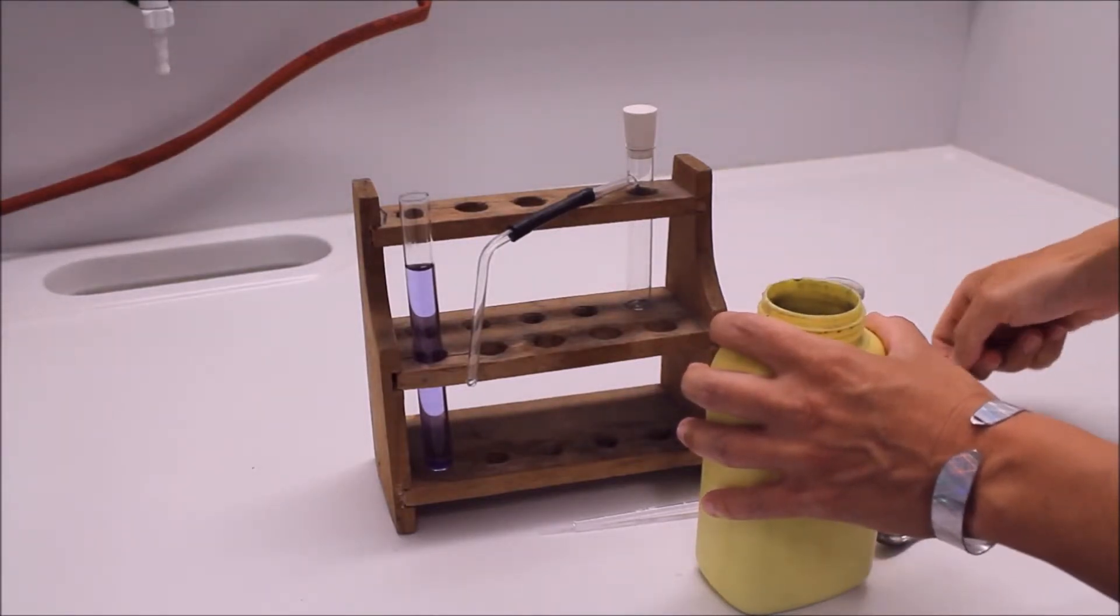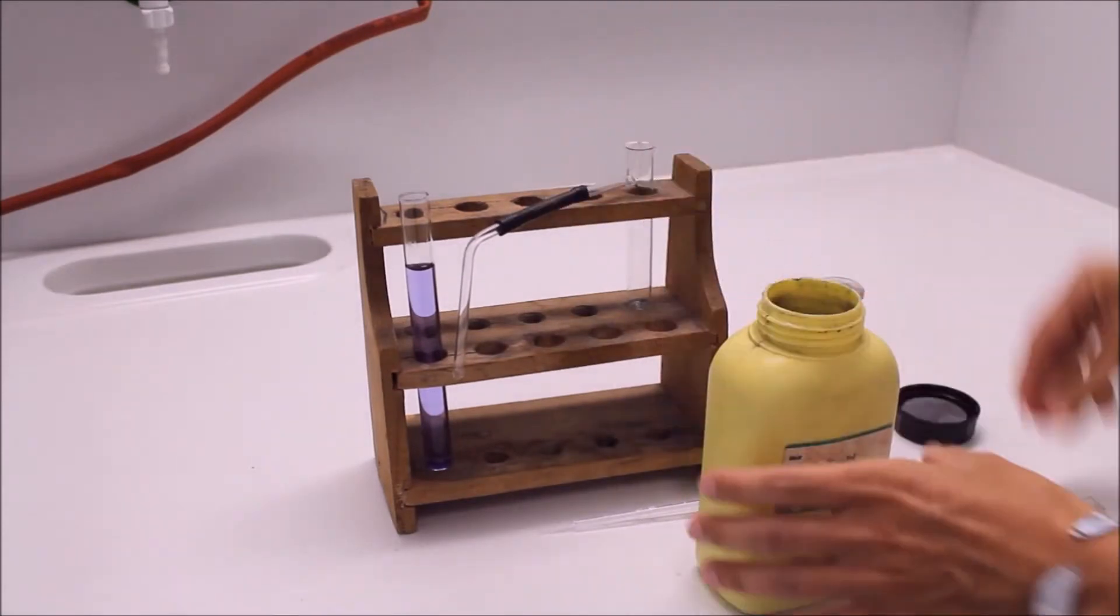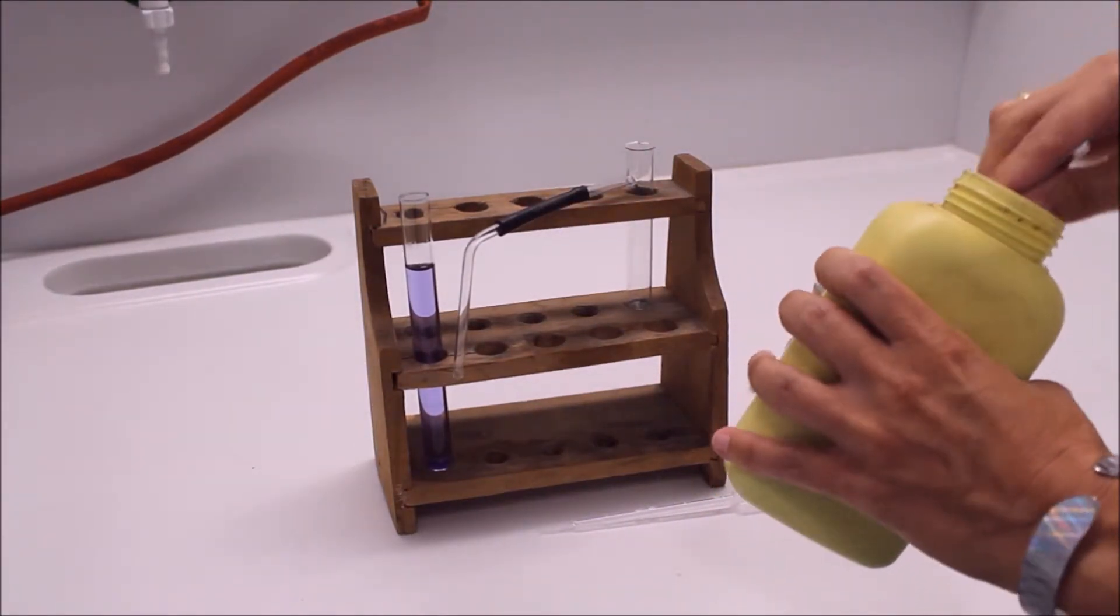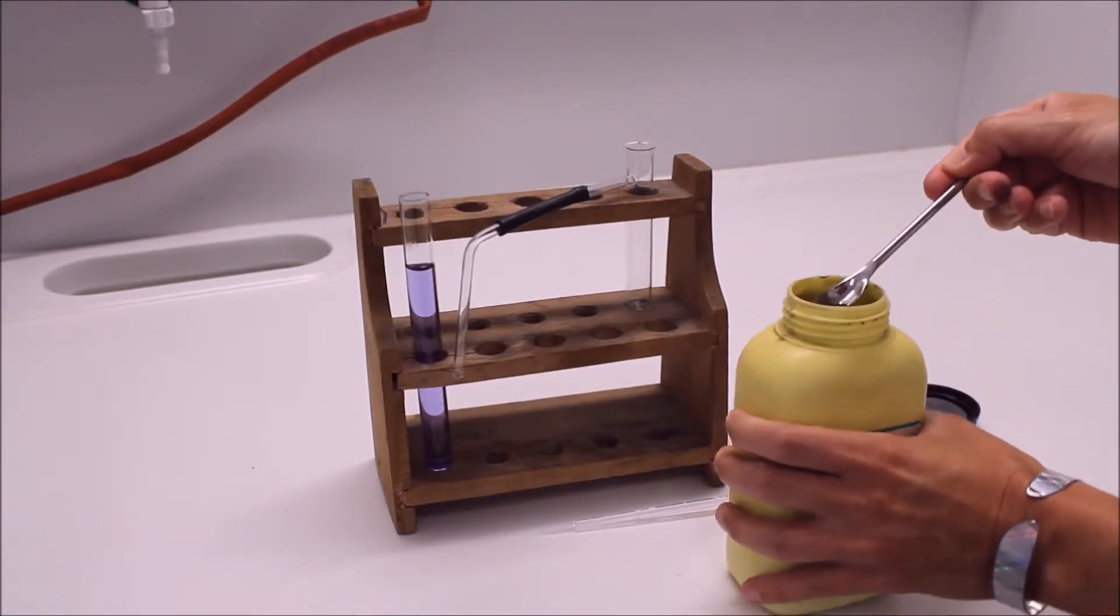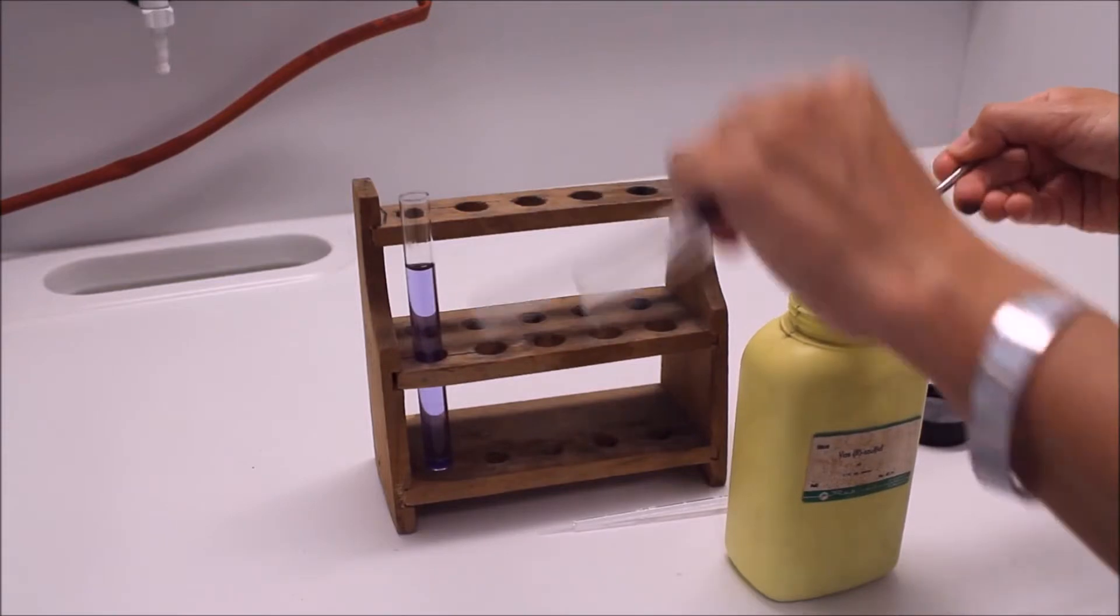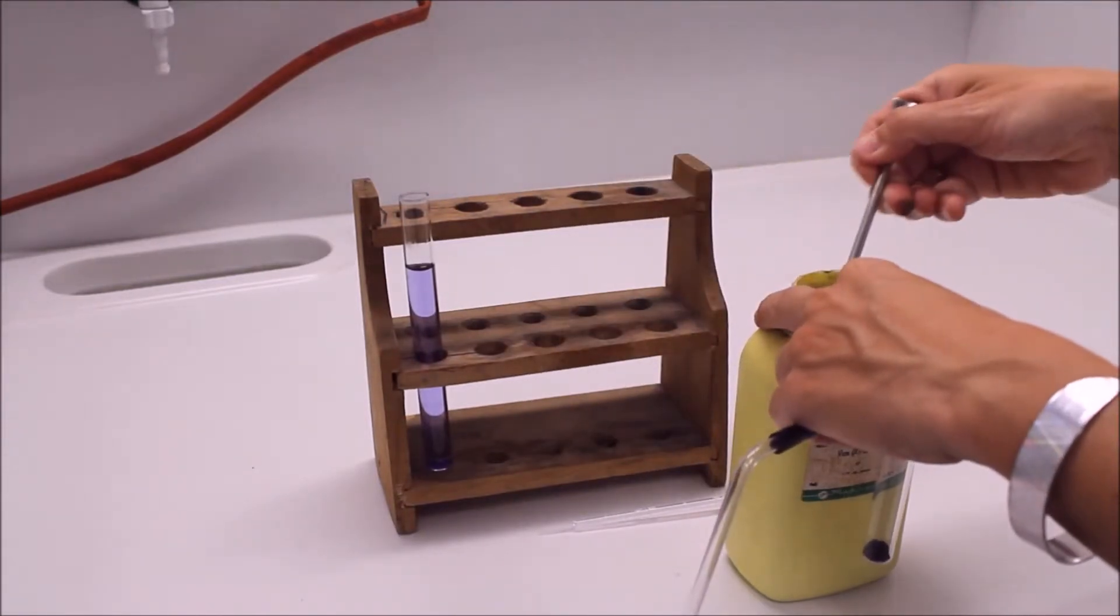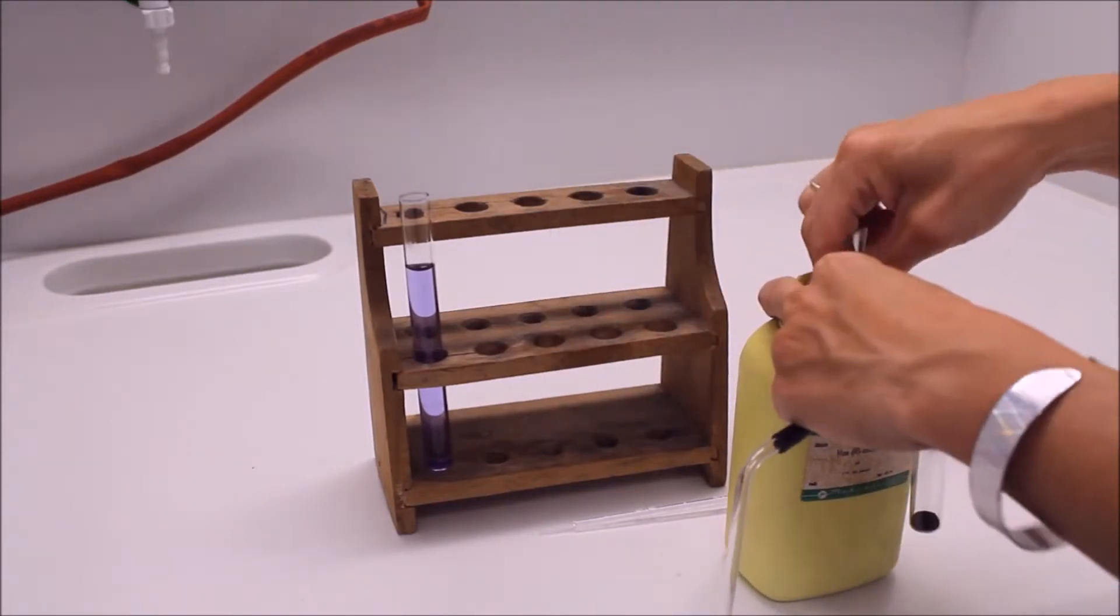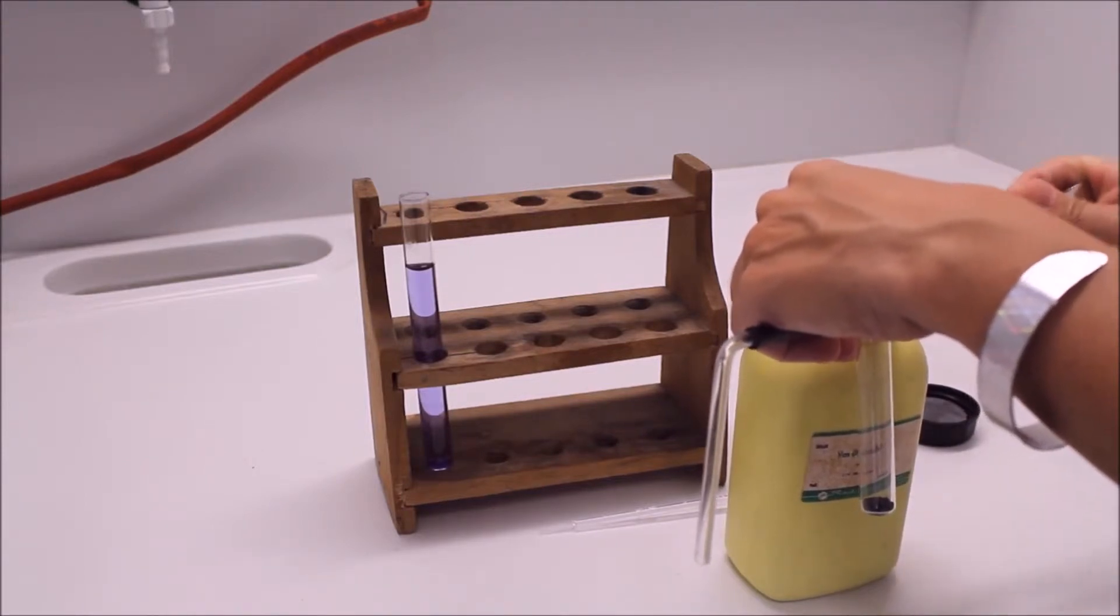Már az előbb említettem, hogy a kénhidrogén gáz halmazállapotú anyag. Ezen meg is lepődhetünk, vagy meg is lepődhetnénk, ha nem ismernénk a kémiát. A szerkezete megfelel, megegyezik a víz molekulának a szerkezetével. Ennek ellenére a víz szobahőmérsékleten folyékony halmazállapotú, mert molekulái között erős hidrogénkötések vannak.